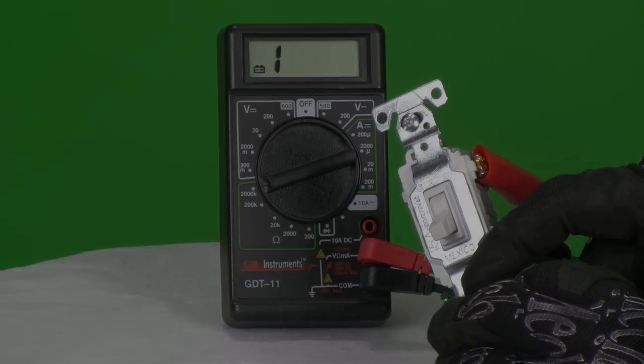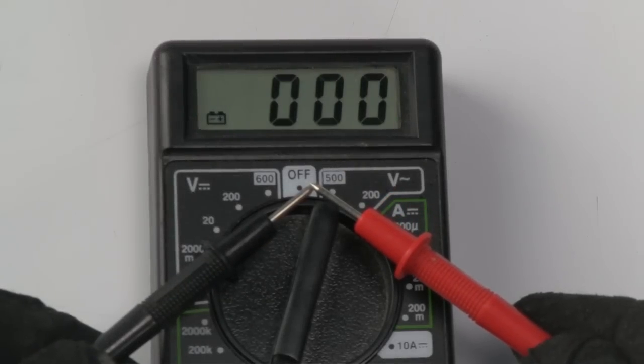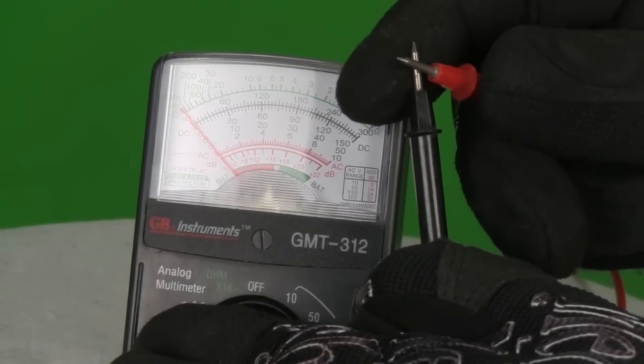Contacting your meter's leads together with the meter's dial set in the omega region gives you a positive continuity reading with zero resistance.